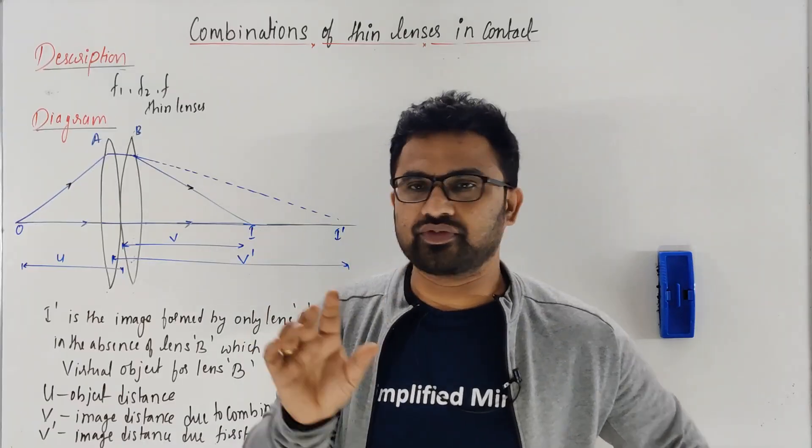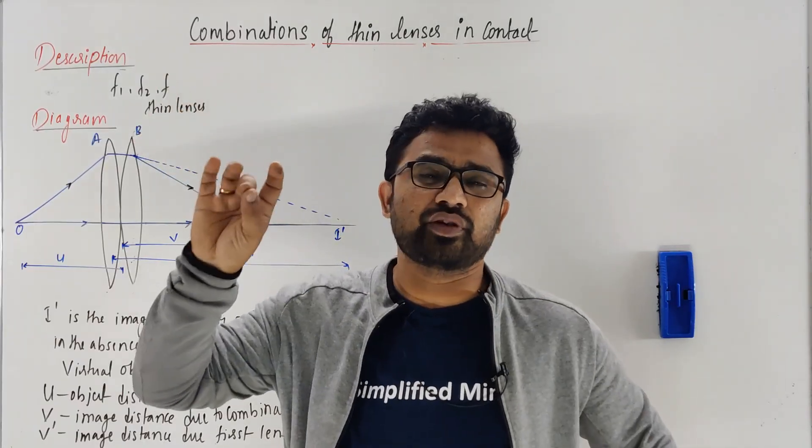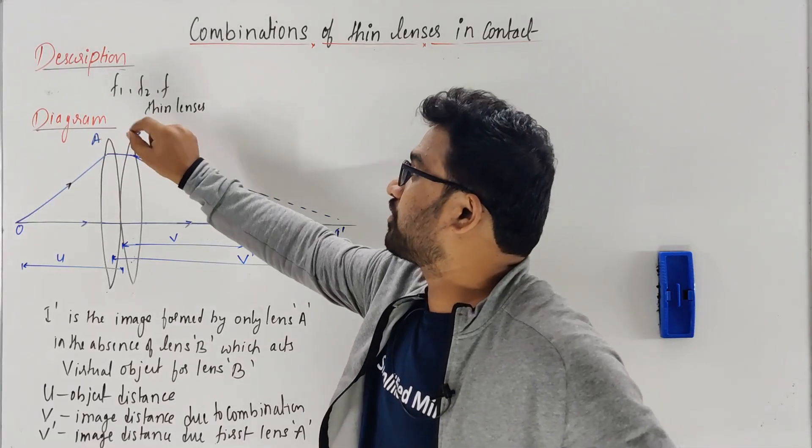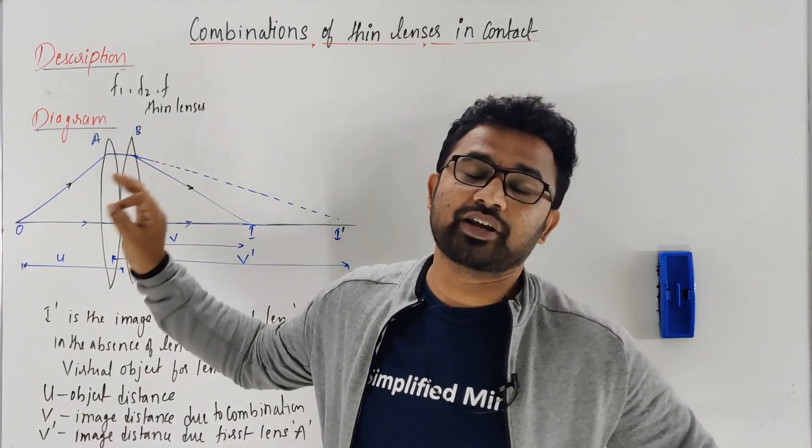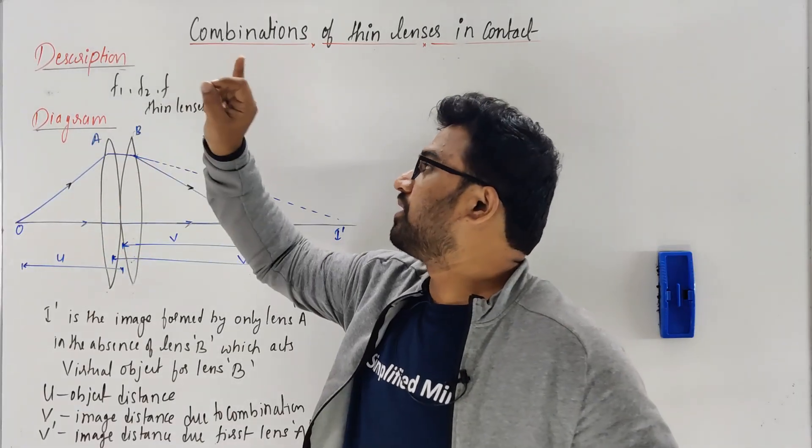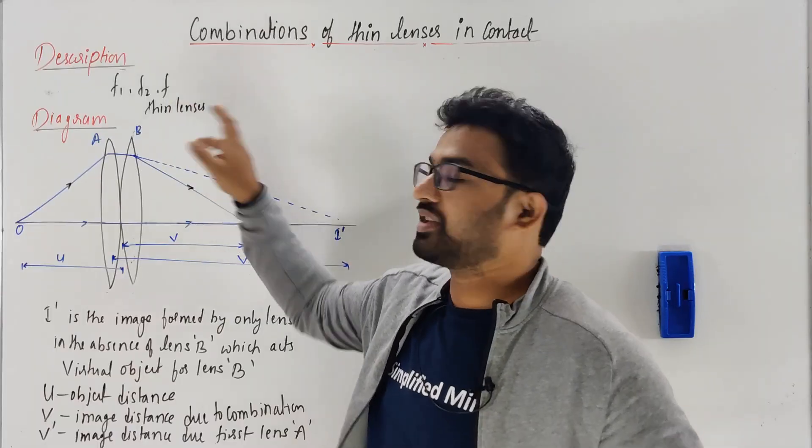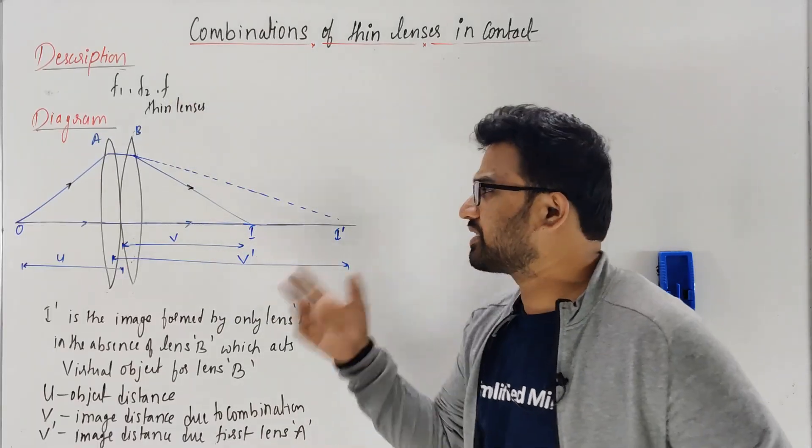You have to write initially: consider two thin lenses of focal lengths f1 and f2. Please mention the word thin lenses.